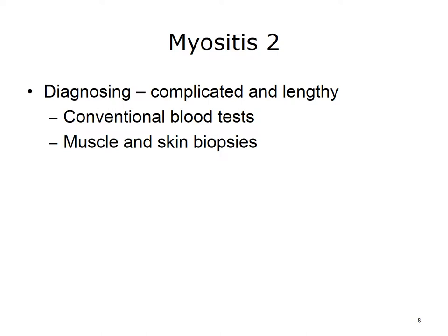Diagnosing myositis is often a complicated and lengthy process. Doctors may use one or more of the following tests to help confirm a specific diagnosis. Conventional blood tests, where doctors look for elevated levels of muscle enzymes in a patient's blood samples. Muscle and skin biopsy, where small samples of muscle tissue show abnormalities in muscles, including inflammation, damage, and abnormal proteins. For those with skin symptoms, doctors often biopsy a piece of skin to study.